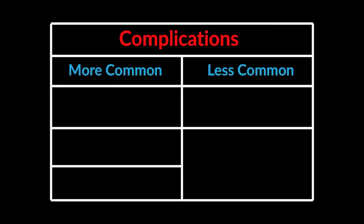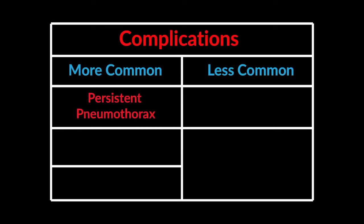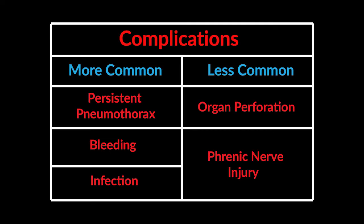Complications — more common: persistent pneumothorax, bleeding, and infection. Less common: organ perforation and phrenic nerve injury.